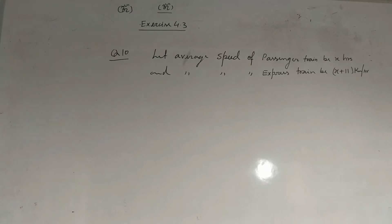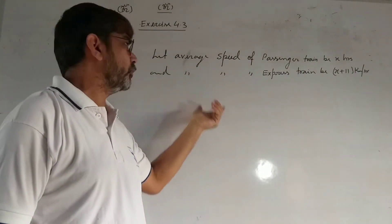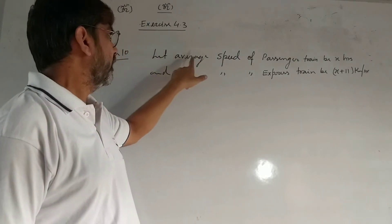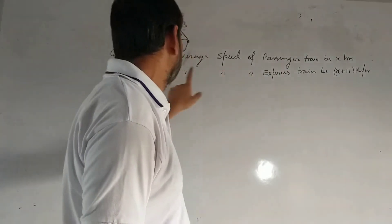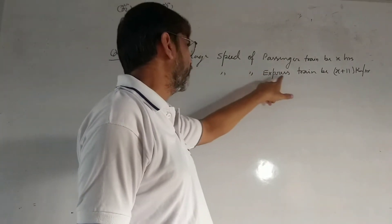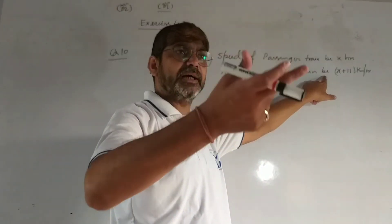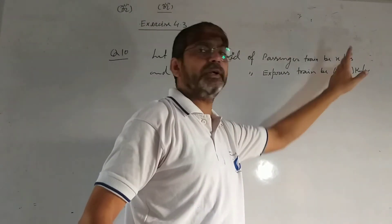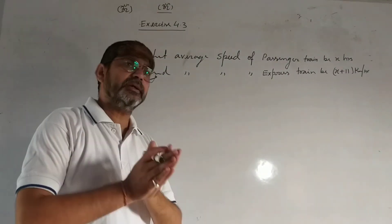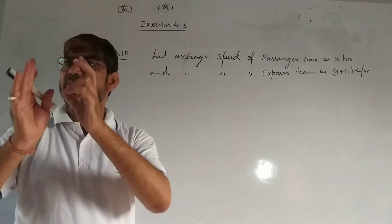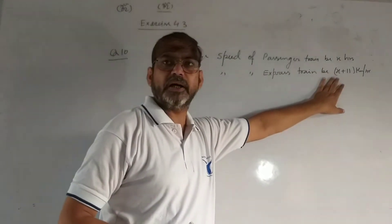यह question में हम दोनों trains की average speed पूछ रहा है। तो उन्हें assume कर लिया - let average speed of the passenger train be X km/hr, and average speed of the express train be X plus 11 km per hour. यह relation दिया है कि express train की speed, passenger train की speed से 11 km per hour ज्यादा है।